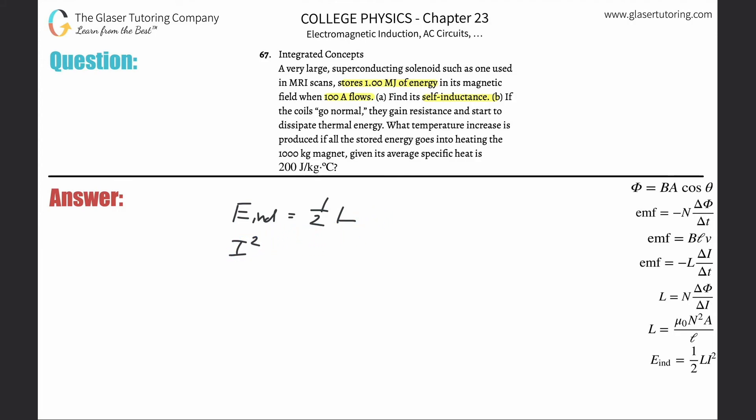So the I squared goes to the bottom, and then the one half you can also bring to the bottom, but dividing by one half is the same thing as multiplying by two, so I'm just going to leave it like that because it looks a little nicer.